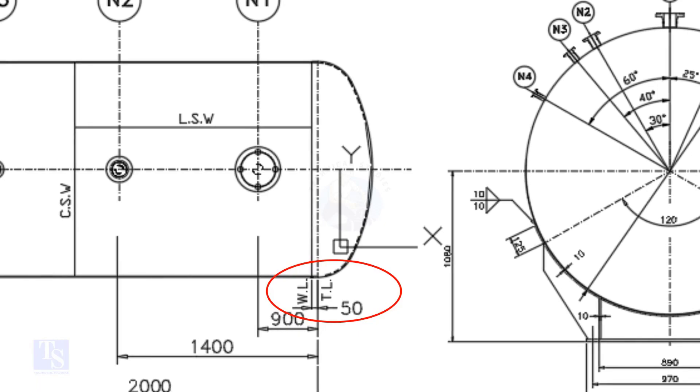What is TL and WL? TL stands for Tan Line and WL stands for Weld Line. The surface between the TL and the WL is called SF or Straight Face.